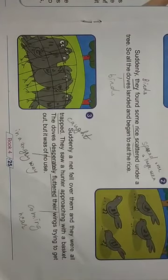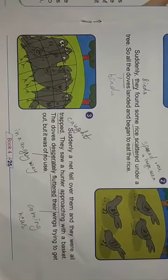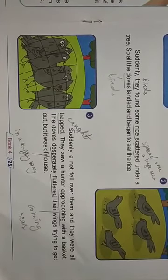The doves desperately, desperately means in an angry way, fluttered their wings trying to get out. But it was of no use. As the doves were caught or trapped in the net, they were unable to fly high or they were not able to fly and get escaped.